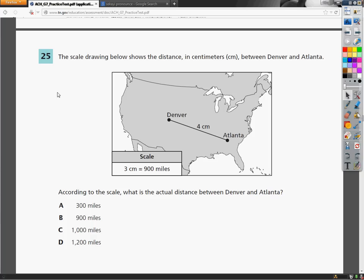I could set up a proportion here where I would do 3 centimeters is 900 miles, and I set that equal to 4 centimeters and then X, and then I just cross multiply and divide. Or I can just figure out how many miles 1 centimeter is and then find out what 4 is.